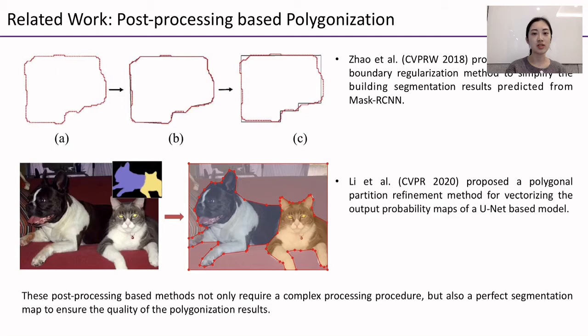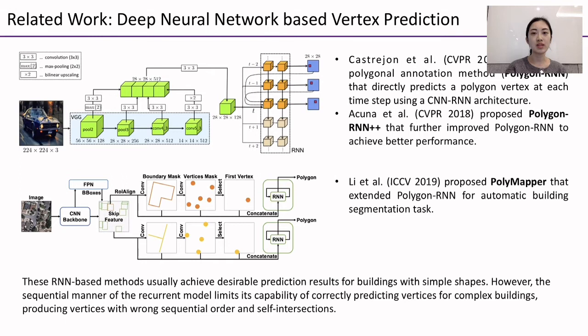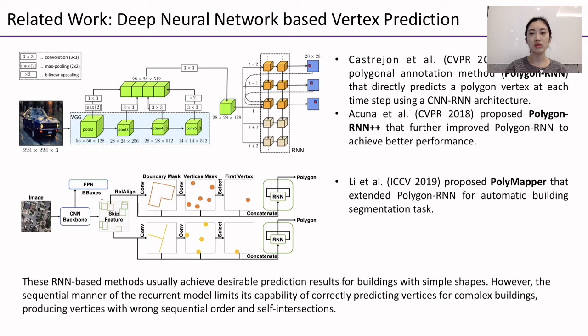The other category of polygonal segmentation methods directly predicts the polygon vertex using deep neural networks. Several methods directly predict a polygon vertex at each time step using a CNN-RNN architecture, such as Polygon-RNN, Polygon-RNN++, and PolyMapper. These RNN-based methods usually achieve desirable prediction results for buildings with simple shapes. However, the sequential manner of the recurrent model limits its capability of correctly predicting vertices for complex buildings, producing vertices with wrong sequential order and self-intersections.